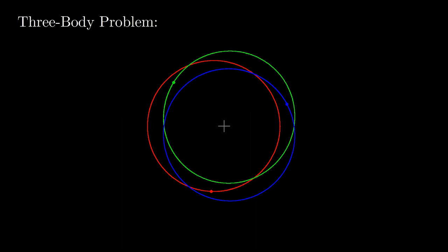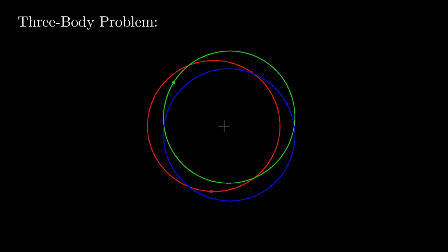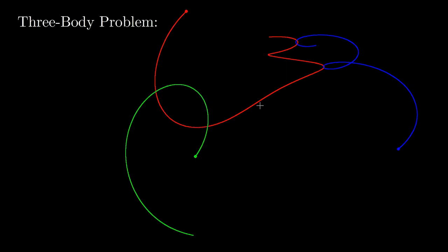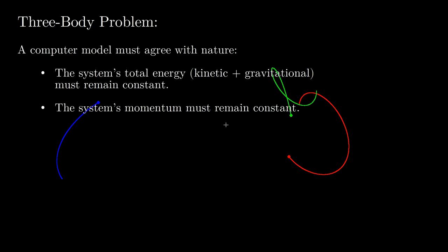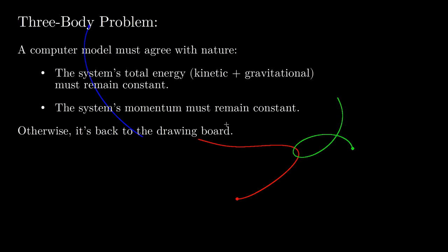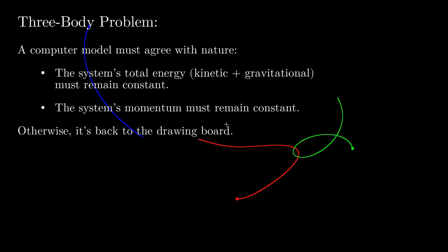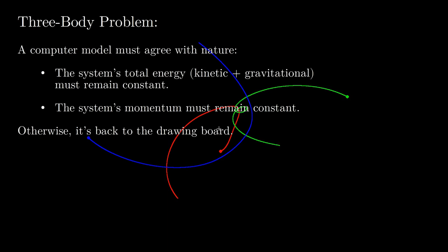While I show this nice three-body animation again, I want to say there are ways to test a computer model's fidelity to nature. First, the system's total energy, the sum of kinetic and potential energy, should remain constant, consistent with conservation of energy. Second, the system's center of mass, shown here with a small gray cross, should not change position, consistent with conservation of momentum. When I design orbital models like this, I monitor the physical properties as the simulation proceeds, and if they drift away from the initial values, I know the model needs more work.